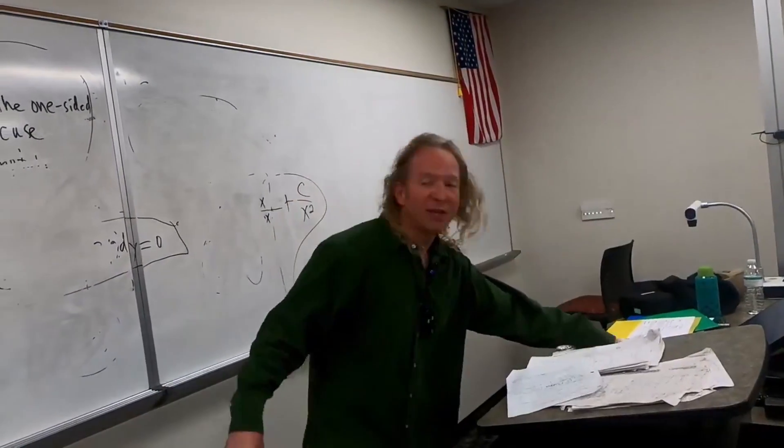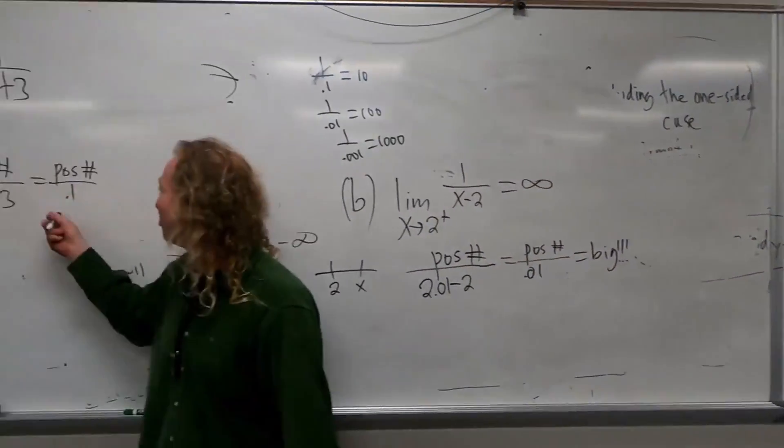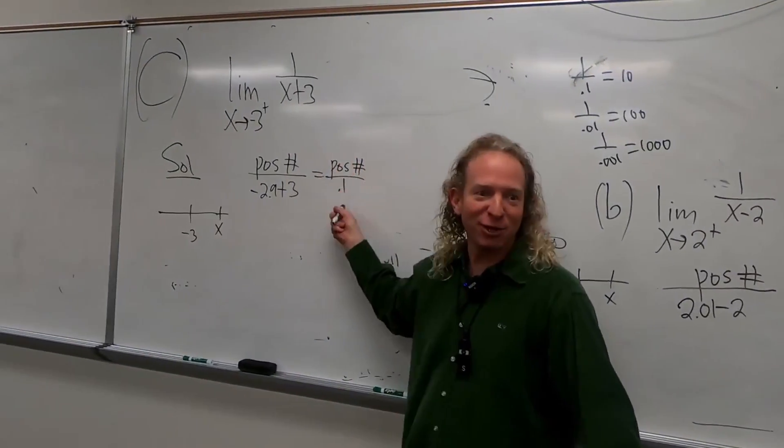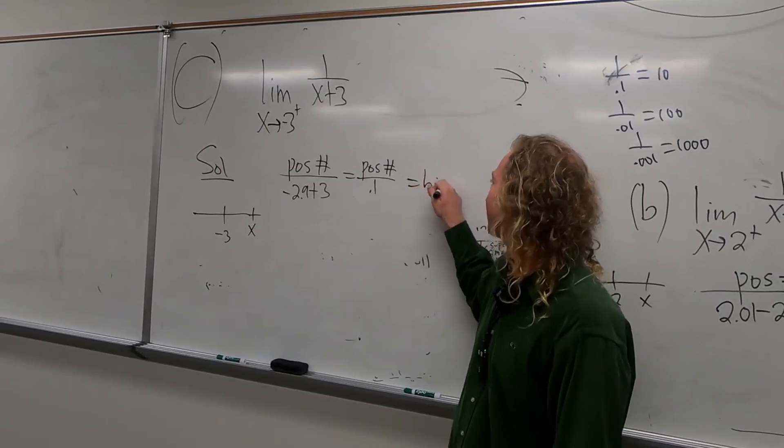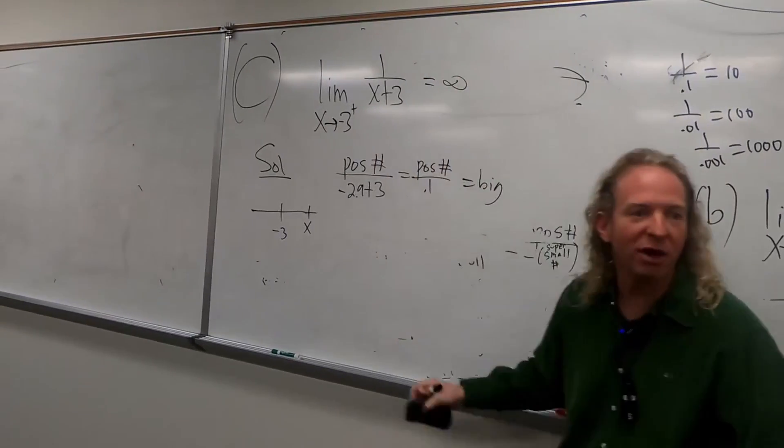So, yeah. That's good. You might need the points. So, it's going to be infinity. Positive over something small. So, this is big. So, it's infinity. Good. Let's do another one. Let's keep going.